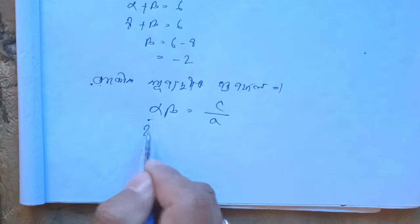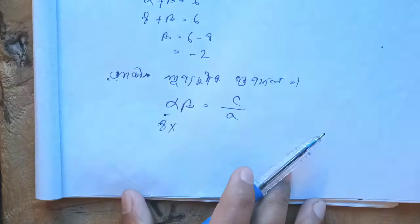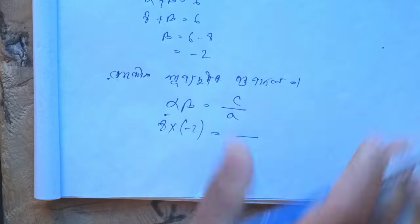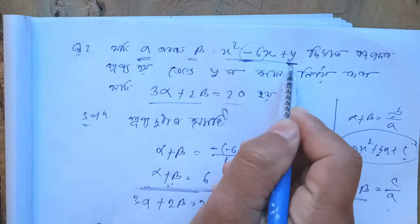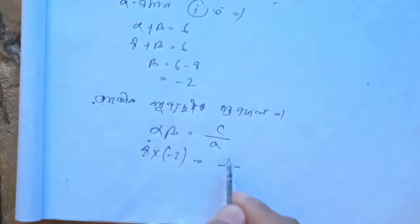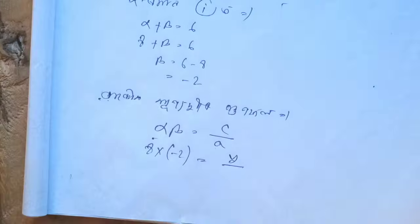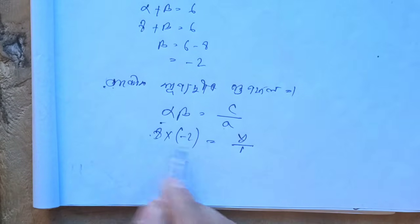Now alpha beta equals c by a. Alpha equals 8 and beta equals minus 2, so alpha times beta equals minus 16. Therefore c equals minus 16. Now we can form the required quadratic equation x squared using these roots 8 and minus 2.